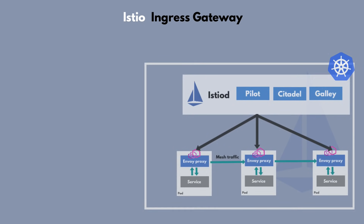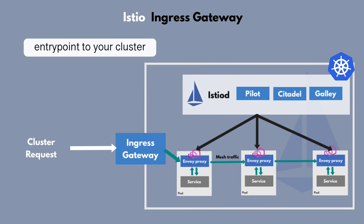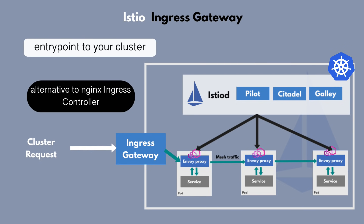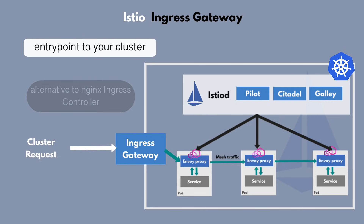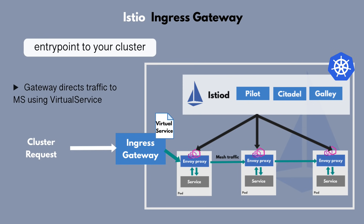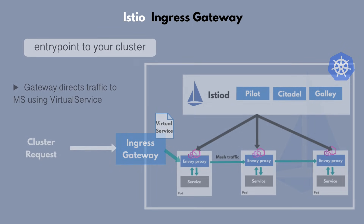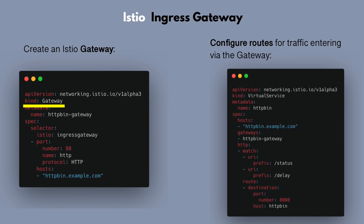Istio has another component called the Istio Ingress Gateway, which is essentially an entry point into your Kubernetes cluster. You can think of the Istio Ingress Gateway as an alternative to the Nginx ingress controller. It runs as a pod in your cluster and acts as a load balancer by accepting incoming traffic, then directing that traffic to one of your microservices inside the cluster using the Virtual Service component. You configure the Istio Gateway using a Gateway CRD.